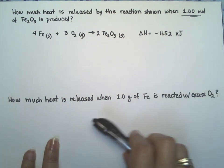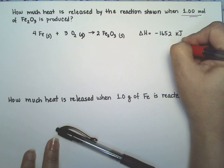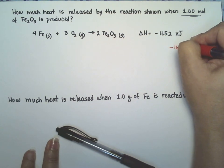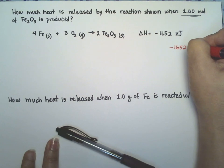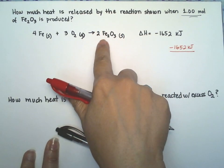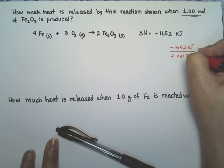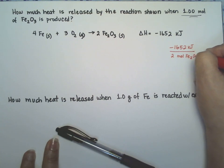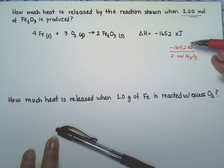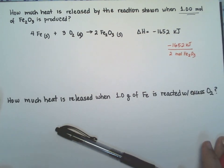If we want to do a conversion factor of the delta H, this 1,652 kilojoules is for every two moles of the di-iron oxide compound formed. So we need to take this into account when we just want to calculate it for one mole.